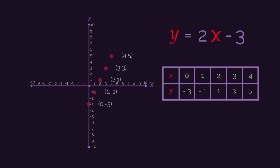So now we just need to join up our coordinates with a straight line using a ruler. Make sure you extend the line the whole way across the graph and label it with its equation.